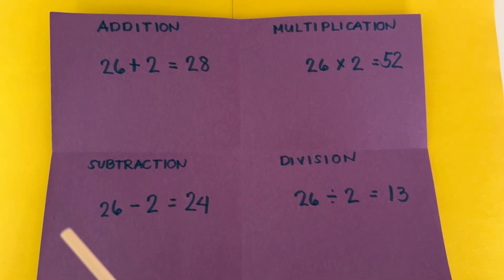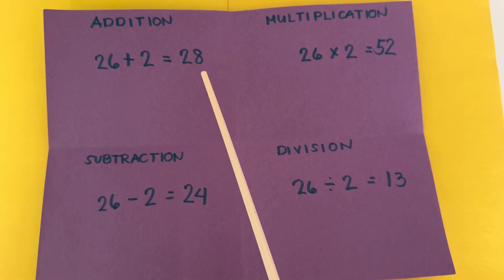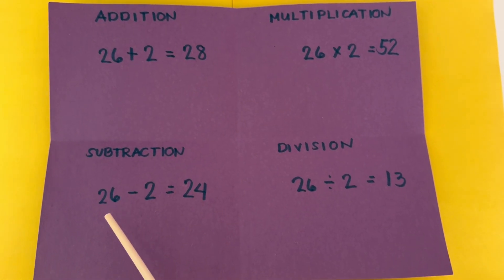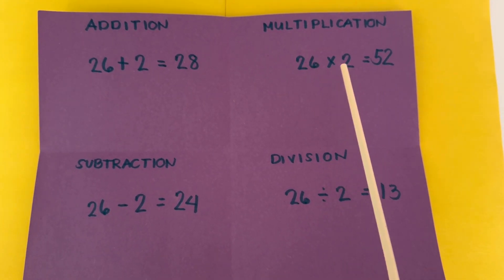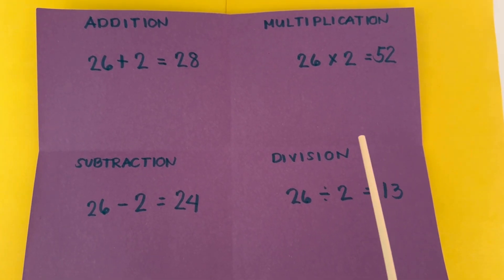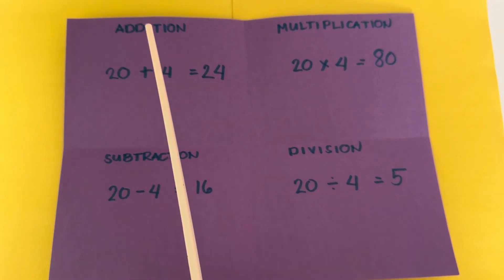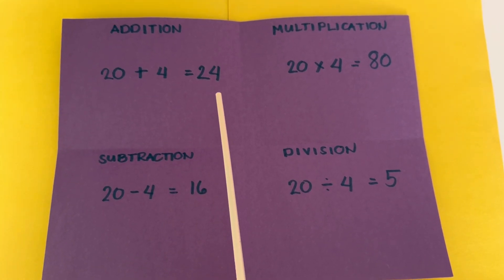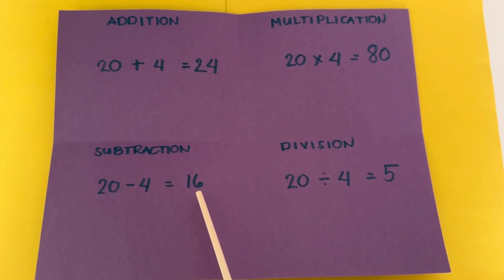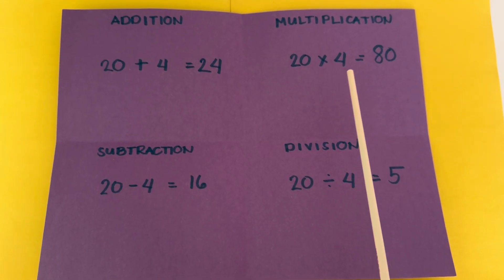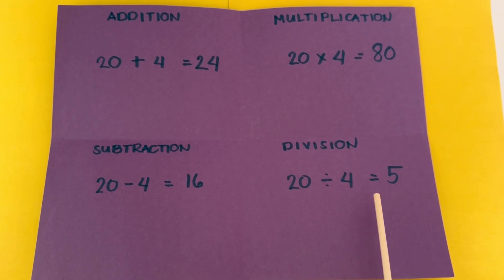Now, join me and let's try some examples. Addition: 26 plus 2 is equals to 28. In subtraction, 26 minus 2 is equals to 24. In multiplication, 26 times 2 is equals to 52. In division, 26 divided by 2 is equals to 13. Here is another example. In addition, 20 plus 4 is equals to 24. In subtraction, 20 minus 4 is equals to 16. In multiplication, 20 times 4 is equals to 80. In division, 20 divided by 4 is equals to 5.